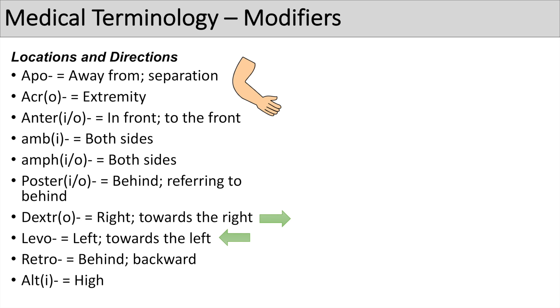The next prefix relating to location and direction is 'alti' or 'alt', which means high. You can think of altitude.